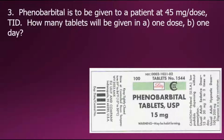In this dosage calculation problem, phenobarbital is to be given to a patient at 45 milligrams per dose TID. How many tablets will be given in one dose and one day? It's asking for how many tablets, so we'll set that as our goal.